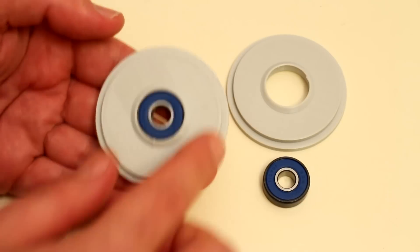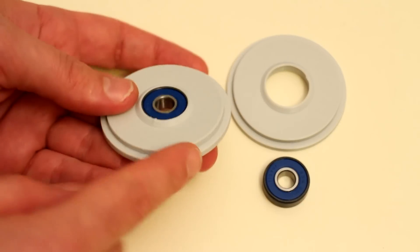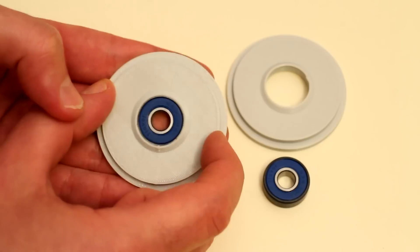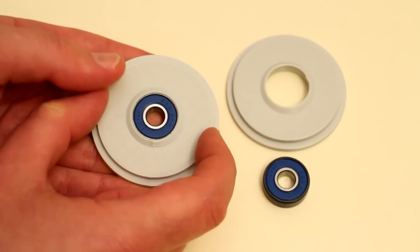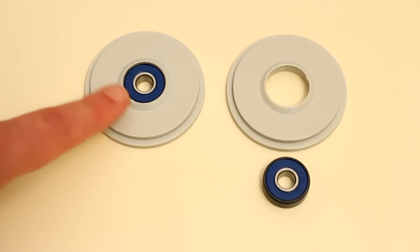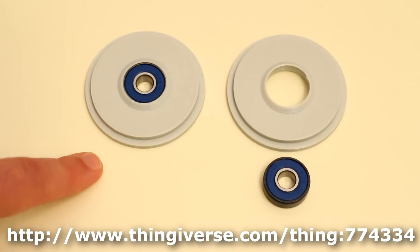On the backside of the spool holder we have a lip or a flange. The diameter of this flange is the diameter of the spool that you'll be using. I've created this CAD design in OpenSCAD and I've uploaded the design to Thingiverse.